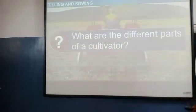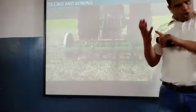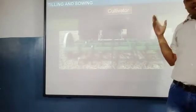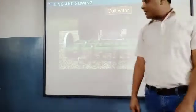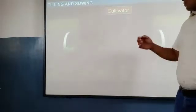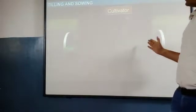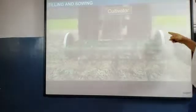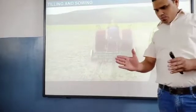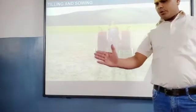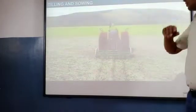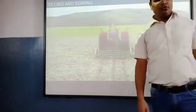What are the different parts of a cultivator? The cultivator comprises two main parts — which are the wheels — by which the cultivator moves from one place to another.